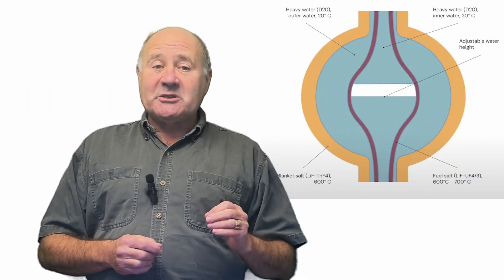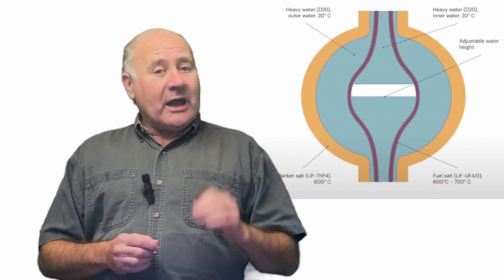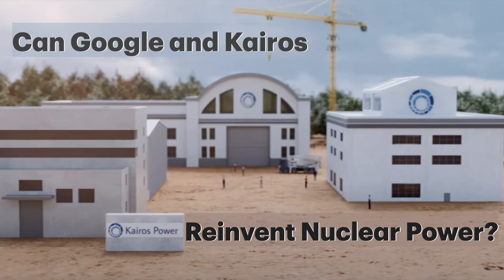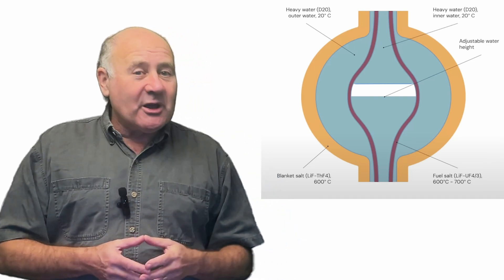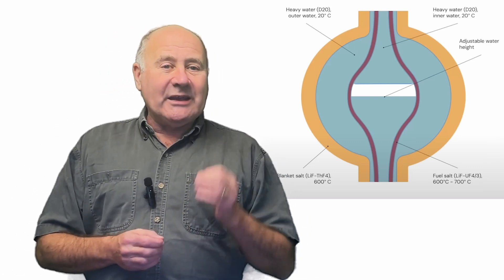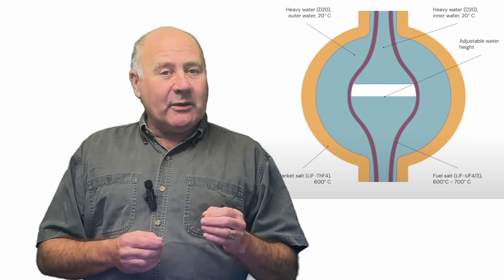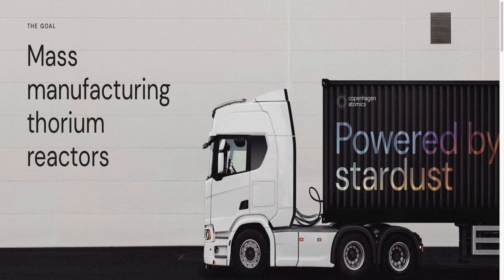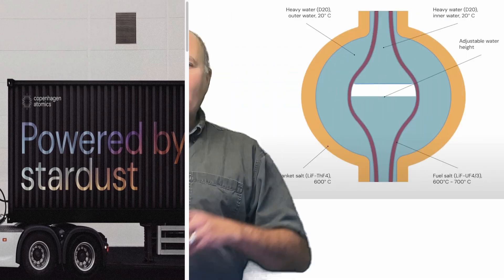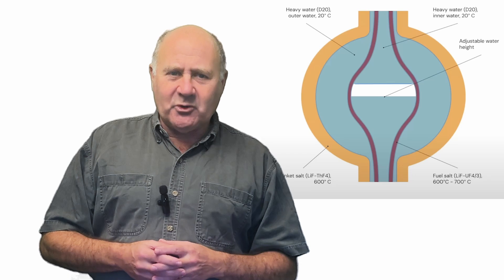Copenhagen Atomics's approach is a molten salt reactor, similar to Kairos, using heavy water as a moderator. But instead of heavily enriched uranium in pebbles, their fuel is bred in the reactor from thorium and is mixed in with the molten salt. And all of the nuclear components will fit inside a 40-foot shipping container. So let's dig into the thorium fuel cycle.